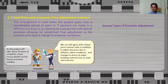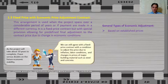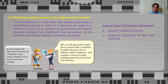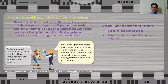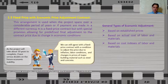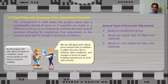In general, the types of economic adjustment are: first, based on established prices — adjustments due to changes from the agreed-upon level in published or otherwise established prices of specific items; second, based on actual cost of labor and materials — adjustments due to changes in specified costs of labor or material that the contractor actually experiences during contract performance; and third, based on cost indices of labor and materials — adjustments due to changes in labor and material cost standards or indices specifically identified in the contract. It is very important that the contract specifies which particular cost index to be used as reference.